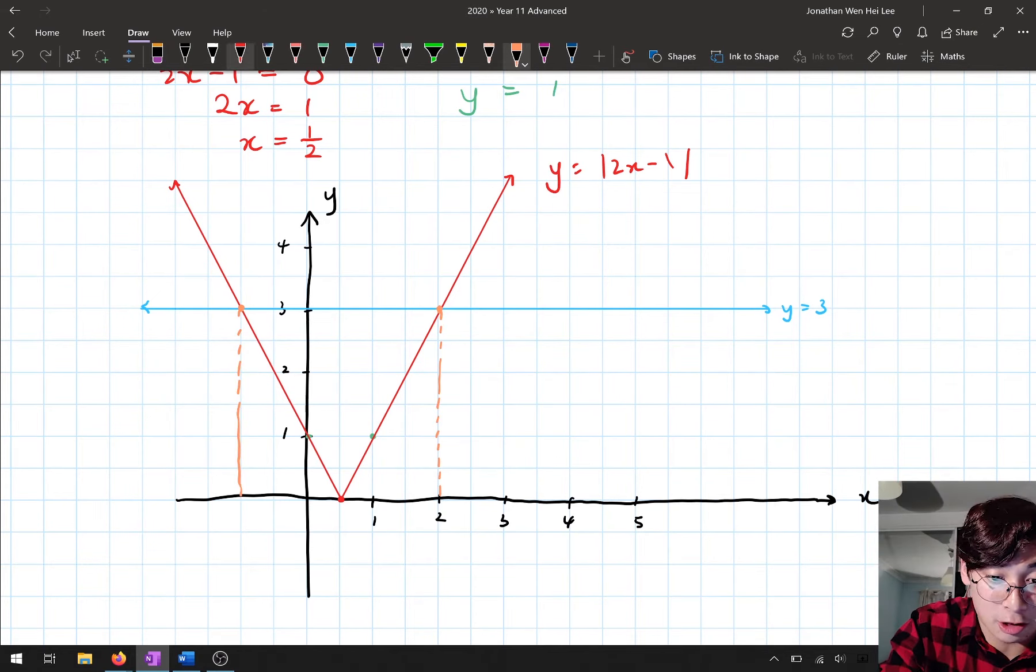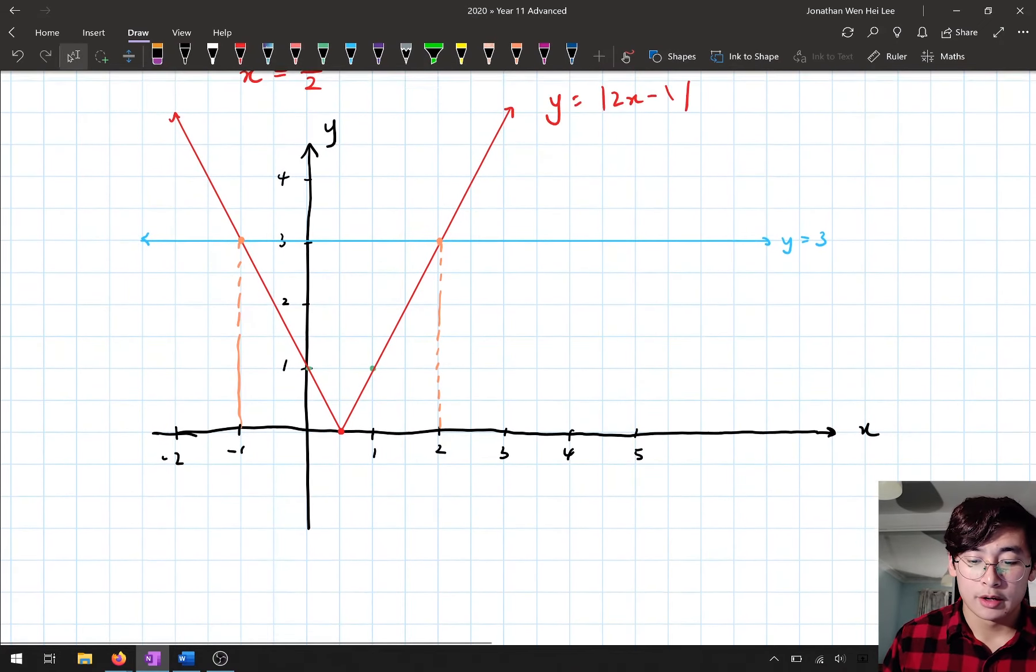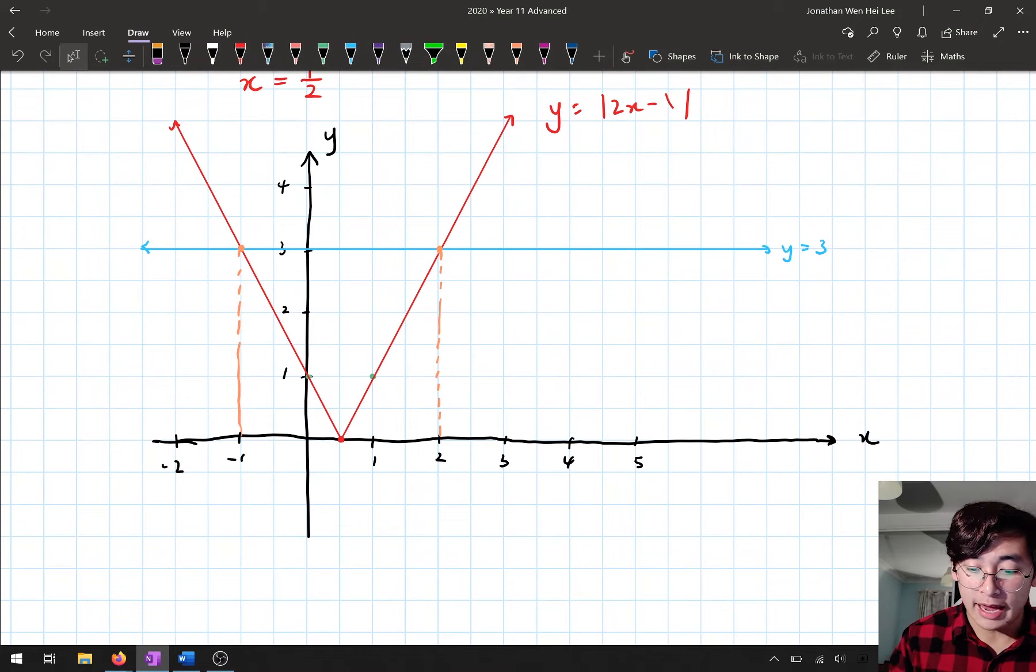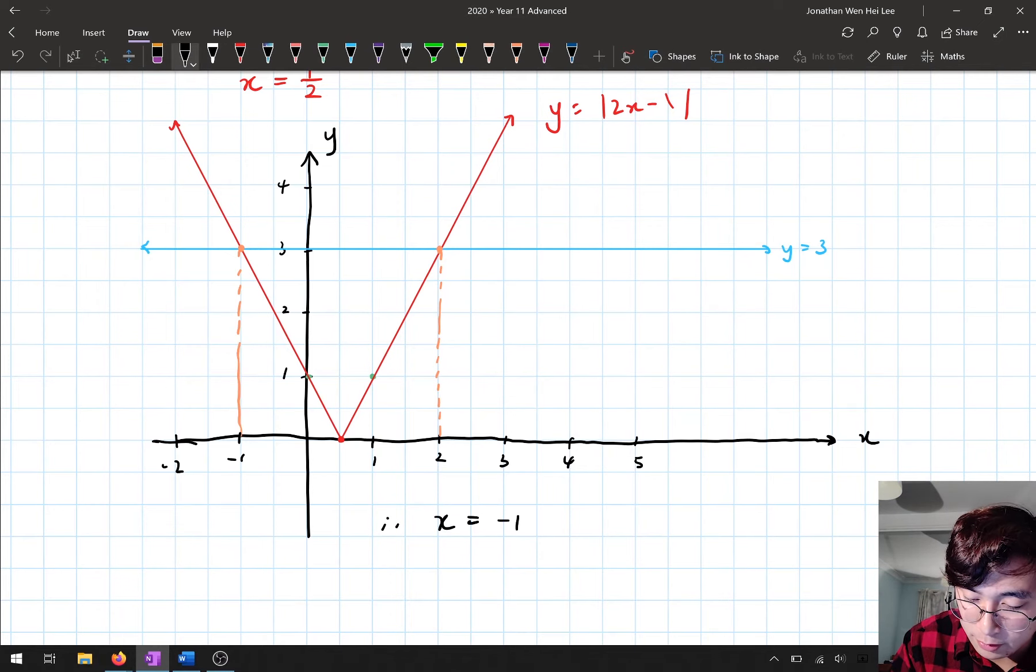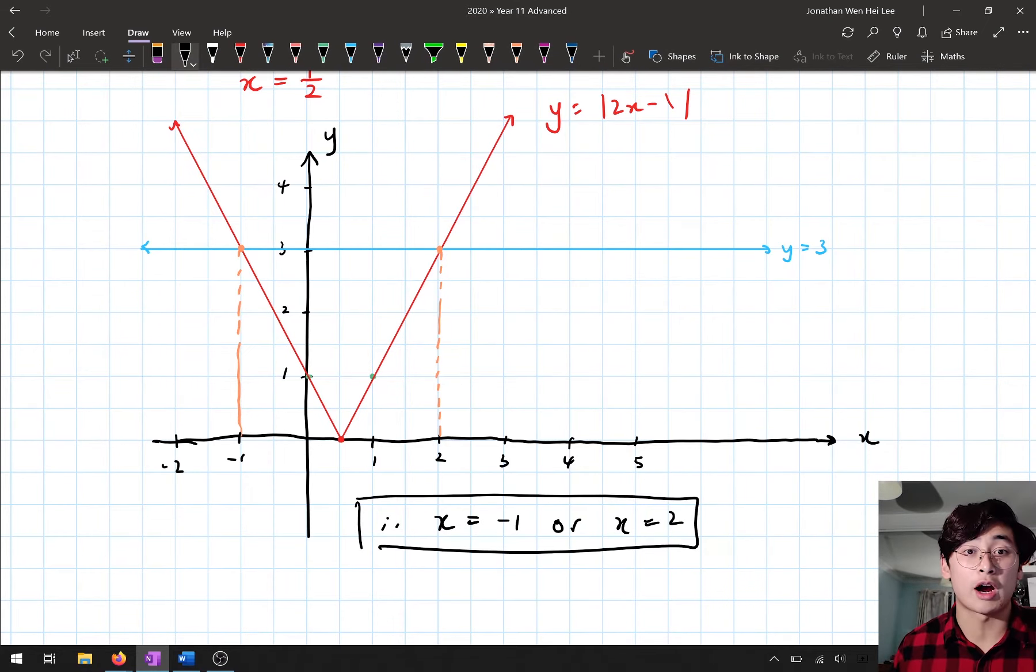Now on the negative side, I didn't actually put in the x coordinate. So here's negative one, negative two. So I read off the x coordinates and the x coordinates are negative one and positive two. And so my solutions for this one is, therefore, x = −1, x = 2.